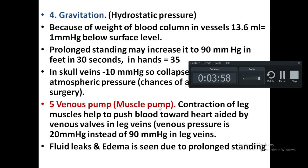The fifth factor is the venous pump, also called the muscle pump. This muscle pump is very important for moving blood from the periphery towards the heart, because contraction of the leg muscles helps push the blood towards the heart. This movement is aided by the venous valves present in the leg veins, so venous pressure is usually 20 millimeters of mercury instead of 90 millimeters of mercury in the leg veins.